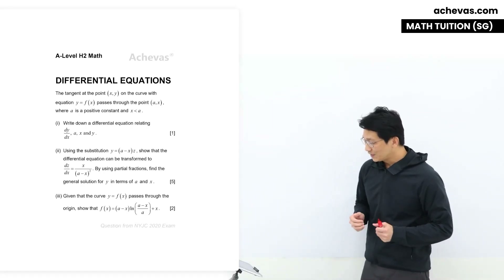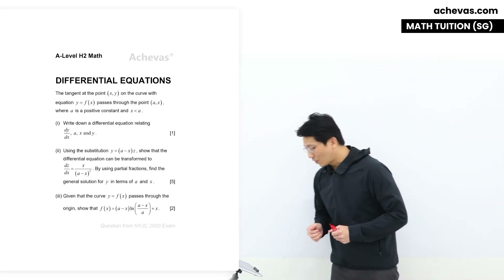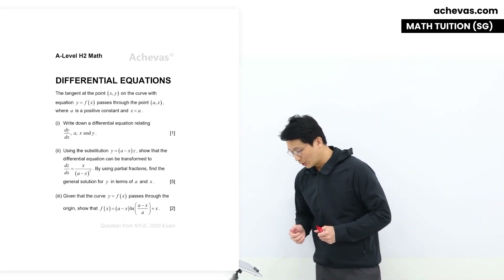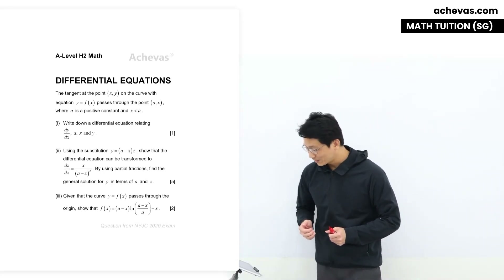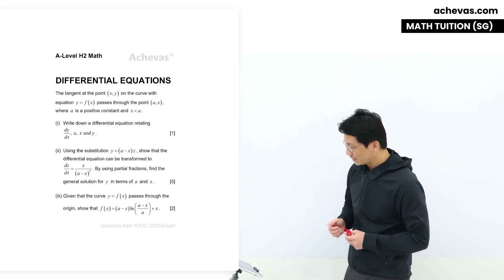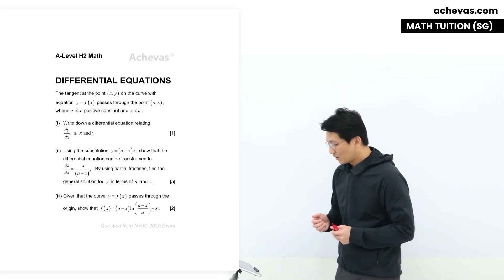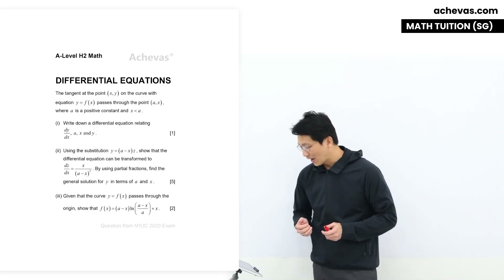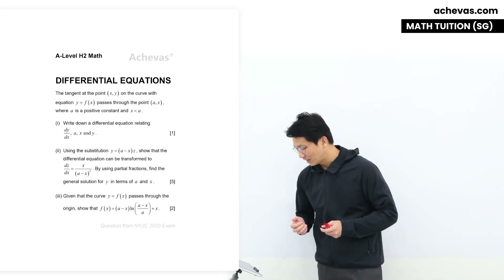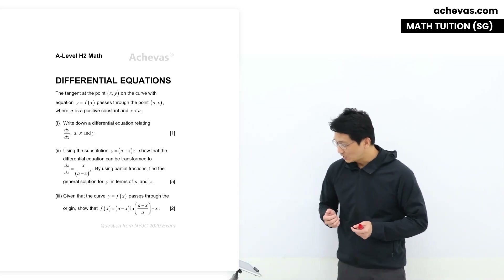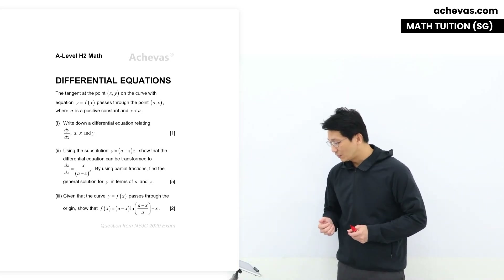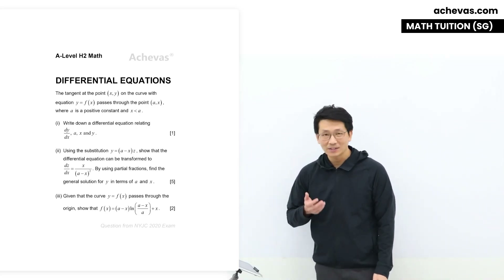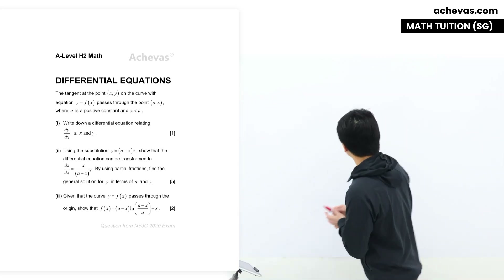In this question, we are given the tangent at the point (x, y) on a curve with equation y = f(x) passes through the coordinates (a, x), where a is a positive constant and x is less than a. Part 1 says: write down a differential equation relating dy/dx, a, x, and y.